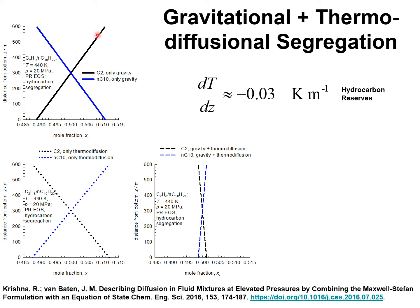The black lines are for ethane and the blue colored lines are for normal decane. Due to gravity, the composition of normal decane increases as we go deeper into the reservoir. The reverse is true for ethane, which has a higher concentration at the top than at the bottom.